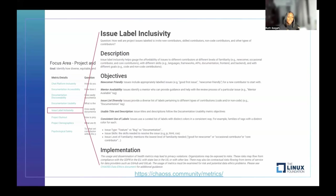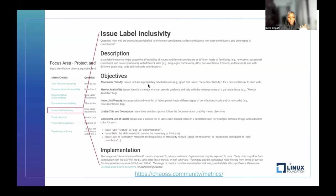Beginners, when they get on open source projects, find it really hard to find issues that speak to their specific skill sets, what they want to contribute to, or whether there are beginner-friendly issues. This particular metric helps you analyze issue label inclusivity — it helps you think about how well your issues are properly labeled to invite new contributors, skilled contributors, non-code contributors, and other types of contributions in your open source project. We go further to deeply describe the objectives of this metric: new contributor friendliness, whether issues are appropriately labeled, and the most popular label — 'good first issue' — for new contributors to start in your project. Is there mentorship availability for that particular issue?